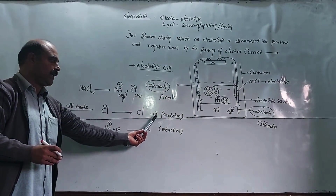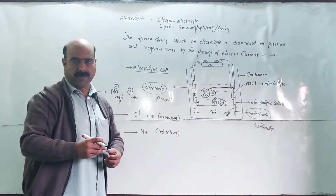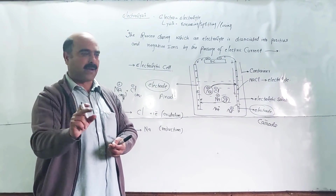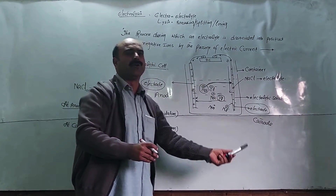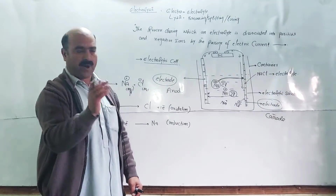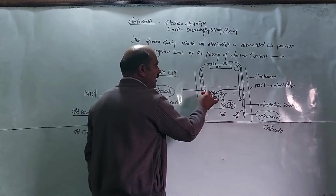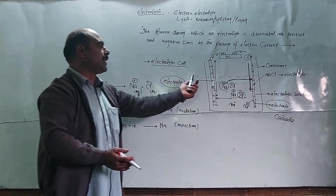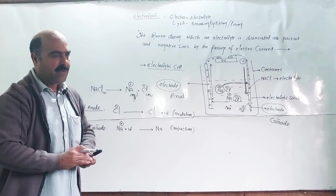The anode is where electron release occurs and the cathode is where deposition occurs. The basic definition of electrodes is: electrodes are metallic plates, metallic wires, or metallic rods through which electrons leave or enter the electrolytic solution. Simply put, the positively and negatively charged plates are called electrodes.